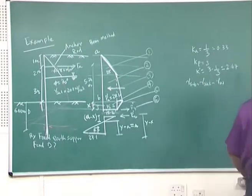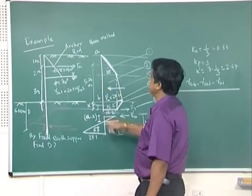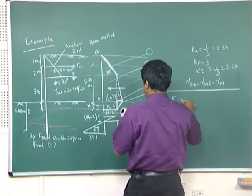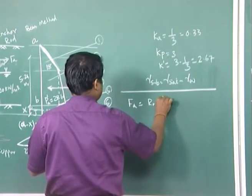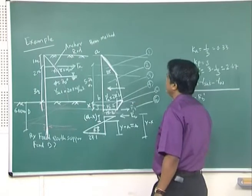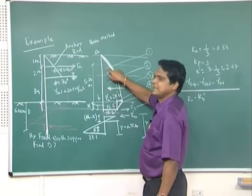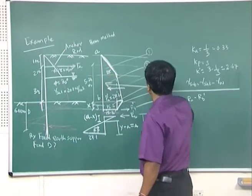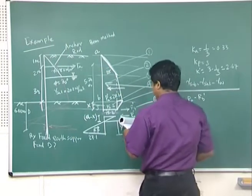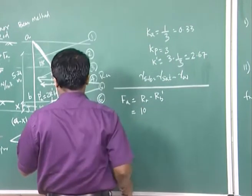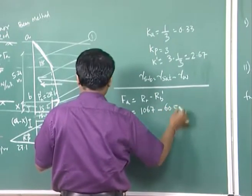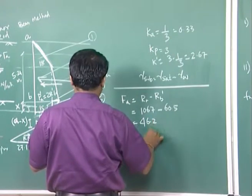Once D is found, the anchor rod force FA can be calculated. FA equals RA minus Rb'. RA is the resultant of all forces acting on the upper part. RA equals 106.7 kN, Rb' equals 60.5 kN, therefore FA = 106.7 minus 60.5 = 46.2 kN.